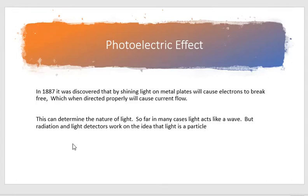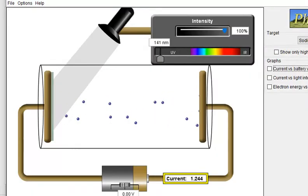We need to understand these terms to talk about the photoelectric effect, because the photoelectric effect was an important discovery that opened the doorway to new types of science. In 1887, it was discovered that shining light on metal plates causes electrons to break free. By taking specific types of light and shining it on various surfaces, you can cause electrons orbiting atoms in that metal to break free and move away from the metal surface.